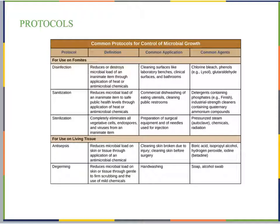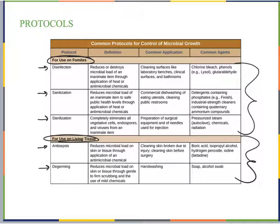A table from the text summarizes common protocols for microbial growth control. It separates them by use on fomites versus use on living tissue. Disinfection, sanitation, and sterilization are all for use on fomites. Antisepsis and de-germing are used on living tissue — things that are not going to harm our skin. You should be familiar with these protocols, know what they're used on, and some examples of what's used.